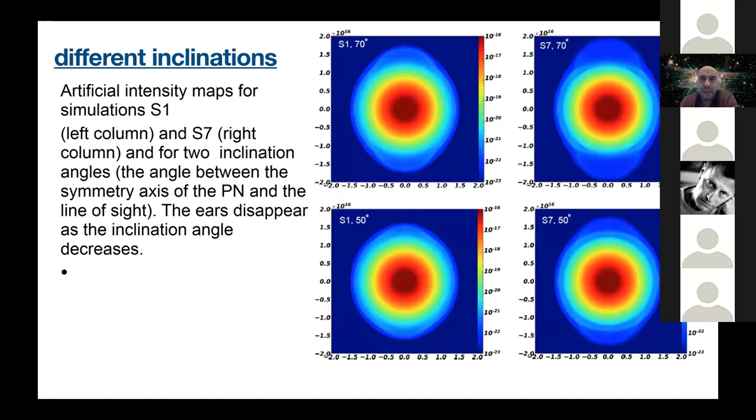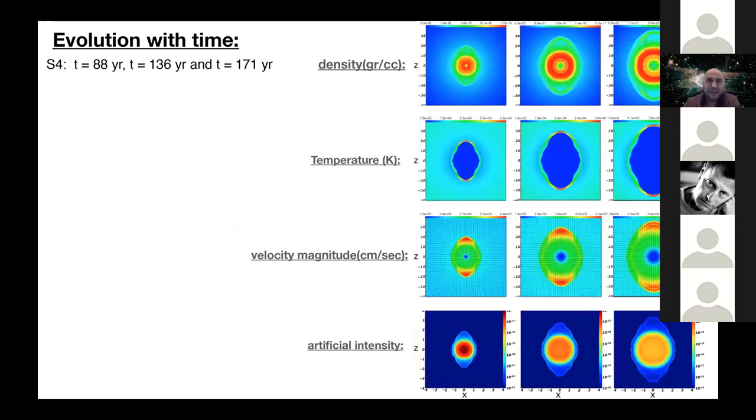Here we play with the inclination angle. It's also the artificial intensity maps for the first simulation for the cases S1 and S7. The inclination angle is actually the angle between the symmetry axis of the planetary nebula and the line of sight, and the ears, as you can see, disappear as the inclination angle decreases. Here, for the same model, I show density, temperature, velocity magnitude, and artificial intensity, but the evolution over time. You can see that the general shape is conserved over time. We also show here the same thing at t equals 136 years, and we finish here with 171 years.